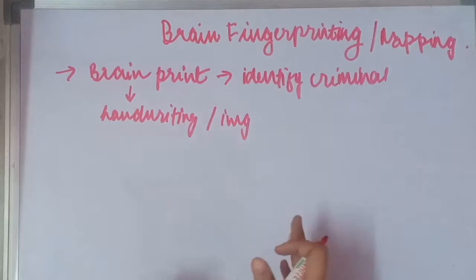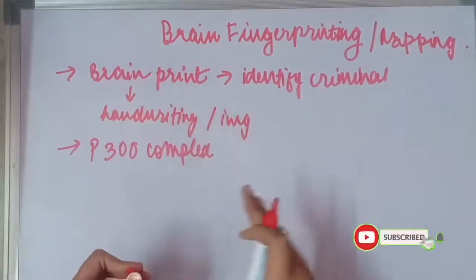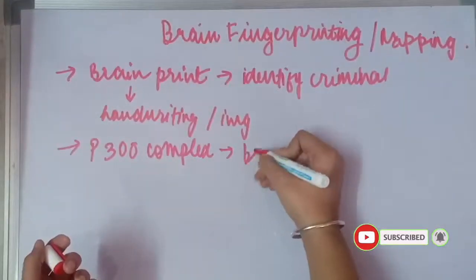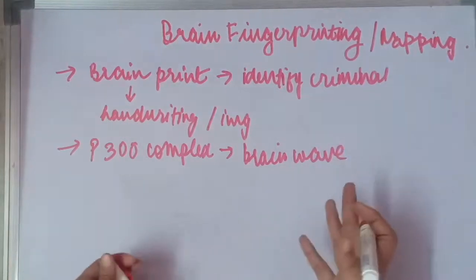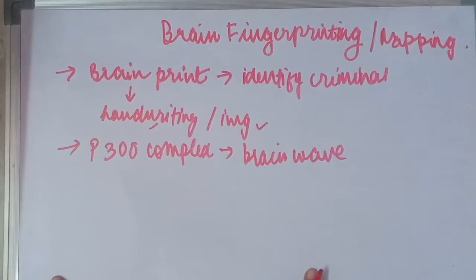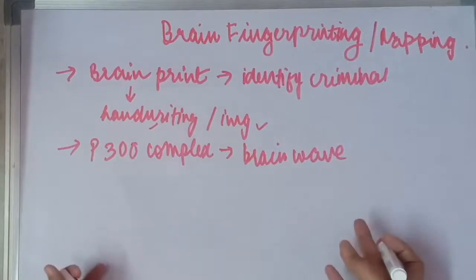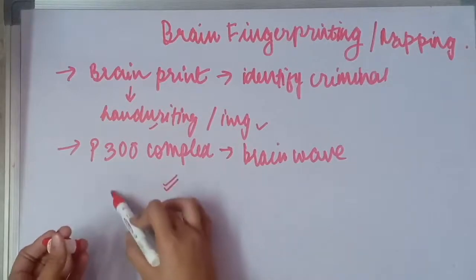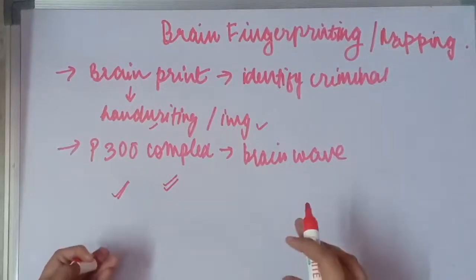This technique basically makes use of the P300 complex. This is a series of brain wave components that can be measured. This brain wave is produced when a certain handwriting or image that the person has already seen is made to see. If we show a particular picture to a criminal and this P300 wave is generated, then that means the person has been at that crime scene before, so we can detect it.